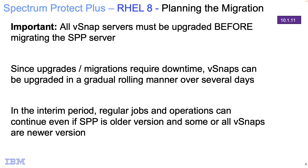These upgrades and migrations are going to require some downtime, because you're going to have to pause the schedules and move the disks on your vSnap. From a planning perspective, we are recommending that you do this in a gradual rolling manner — maybe doing one vSnap at a time, and finally doing the Spectrum Protect Plus server. While you're doing this, if it takes more than one change control, your regular jobs can continue to run and your environment can continue to work.